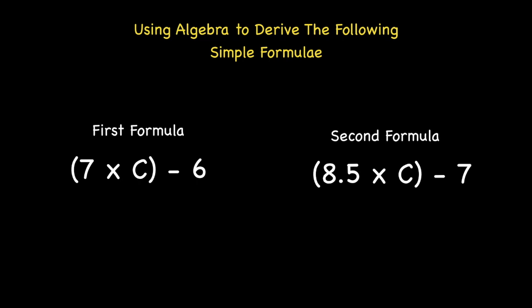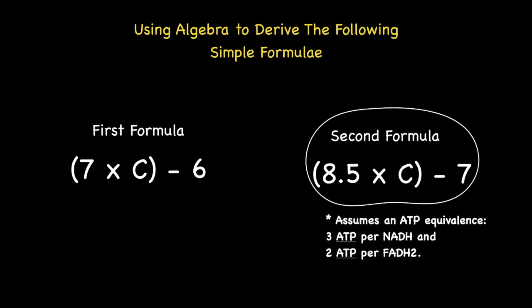Now, it's your turn. Attempt to derive the second formula using the steps outlined for the first formula. Remember that the second formula assumes an ATP equivalence of 3 ATPs per NADH and 2 ATPs per FADH2. Now, there is no need to worry as I have included the model answers for the steps involved later in the video, so that you can compare your answers too. Just pause the video for now and come back once you are confident that you have outlined all the major steps, including the simplification of all the mathematical expressions that lead you to derive the second formula.